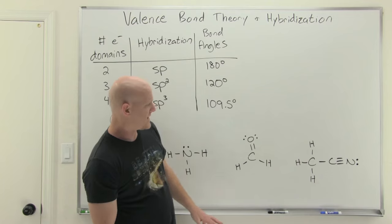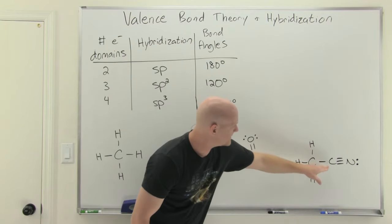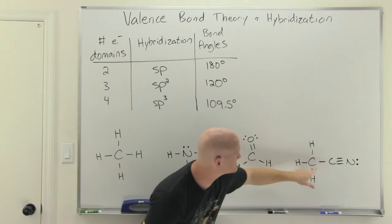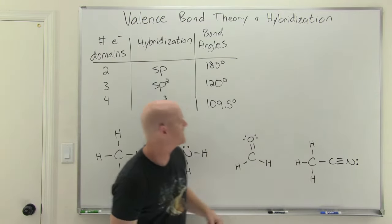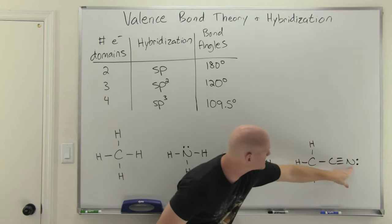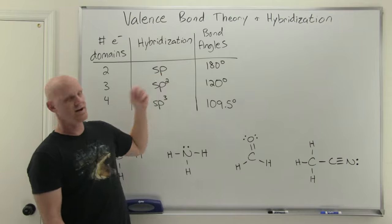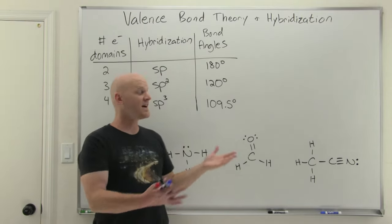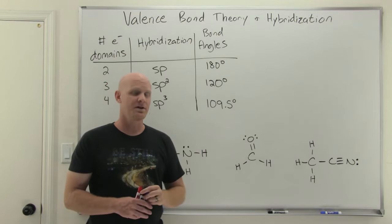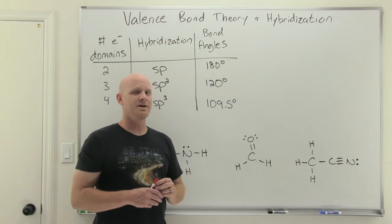Looking at another example: the carbon on the left bonded to four different atoms is sp3 hybridized at 109.5 degrees. The carbon bonded to only two atoms is sp hybridized with bond angles of 180 degrees. The nitrogen bonded to one atom with one lone pair is also sp hybridized with two electron domains. That's how you identify an atom's hybridization — simply count the number of electron domains.